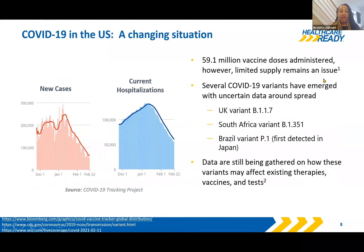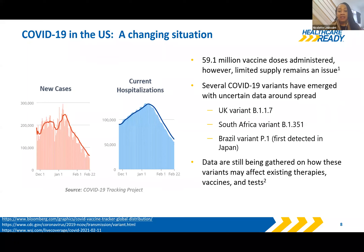COVID-19 is a changing situation. We are starting to see the number of cases and hospitalizations decline. There is some concern from the public health community that as political leadership begins to relax recommendations, we may see an uptick, but right now we're trending in the right direction. There have been multiple variants that have emerged with evolving data — the UK variant, but also the South Africa and Brazil variants are being tracked very closely, with ongoing research into how variants impact existing therapies and EUA-approved vaccines.